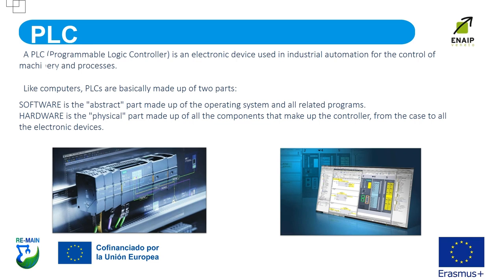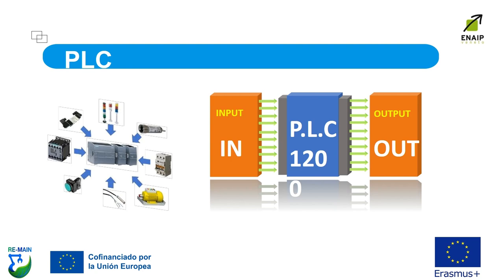PLC. A PLC, Programmable Logic Controller, is an electronic device used in industrial automation for the control of machinery and processes. Like computers, PLCs are basically made up of two parts: software, which is the abstract part made up of the operating system and all related programs; and hardware, which is the physical part made up of all the components that make up the controller, from the case to all the electronic devices.